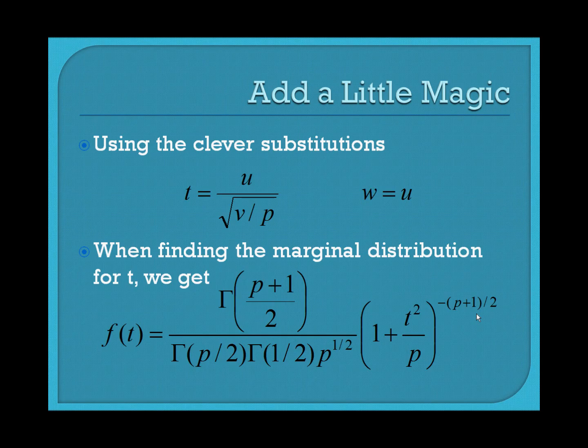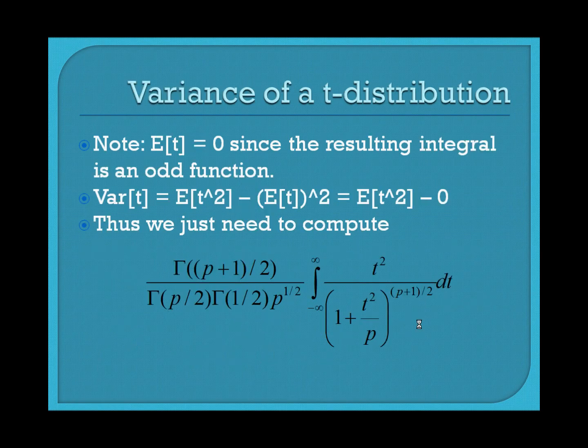Notice that the only place t appears in the PDF is as t squared, which tells us the function is even. So computing the mean: the expectation of t means multiplying an even function by t, giving an odd function. Integrating an odd function from negative infinity to infinity equals zero — so the mean is zero. For the variance, since the mean is zero, we just need to compute the expectation of t squared.